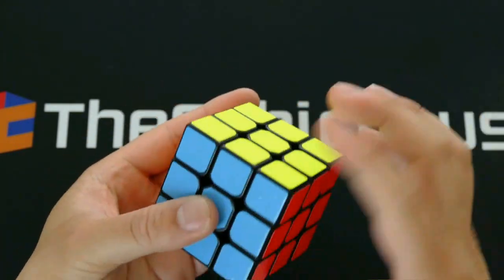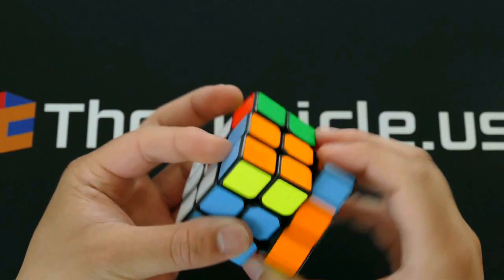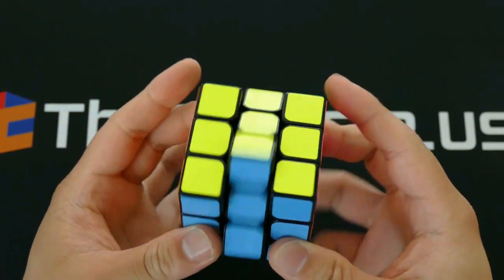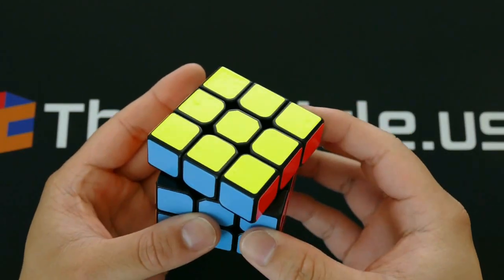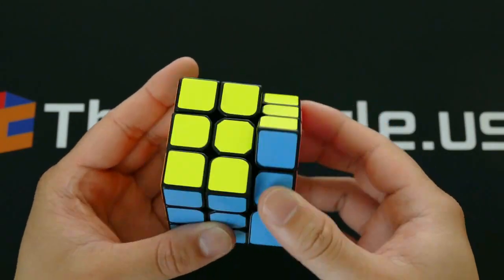We lubed this cube with weight 4 on the core and Maru lube on the pieces. We felt it best to lube it with something very light on the pieces so that the cube retains its light and speedy feel. Lubed this way the cube is fast and crunchy with a slightly hollow feel.